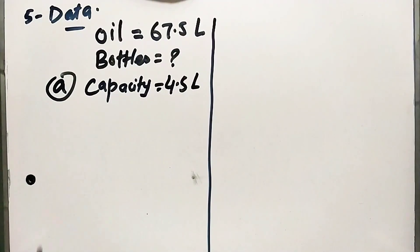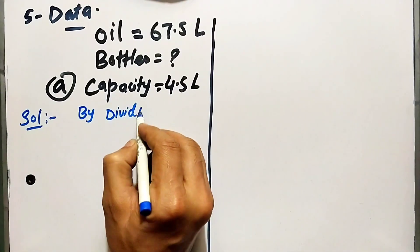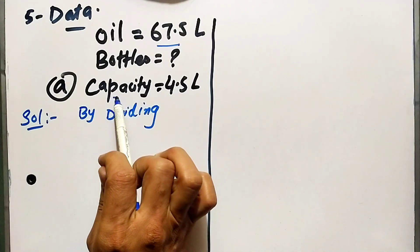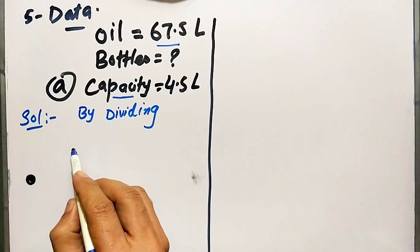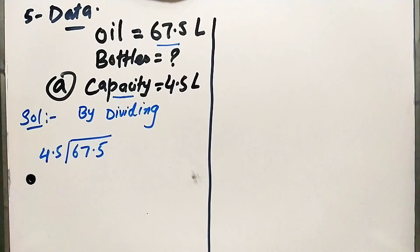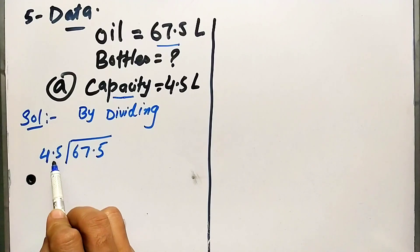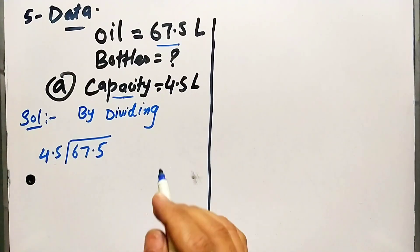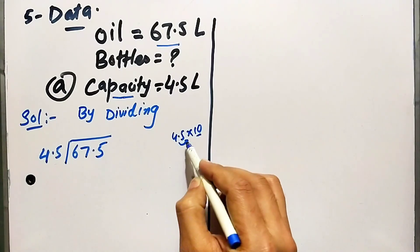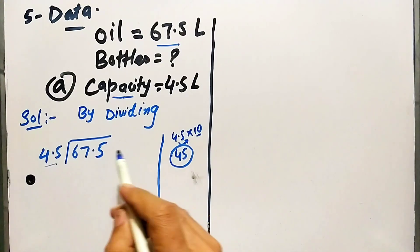Solution: by dividing. We divide the total oil by the bottle capacity — 67.5 divided by 4.5. To remove the decimal from the divisor, multiply both divisor and dividend by 10: 4.5 × 10 = 45, and 67.5 × 10 = 675. So the problem becomes 675 ÷ 45.